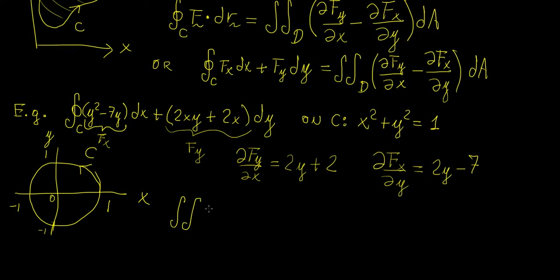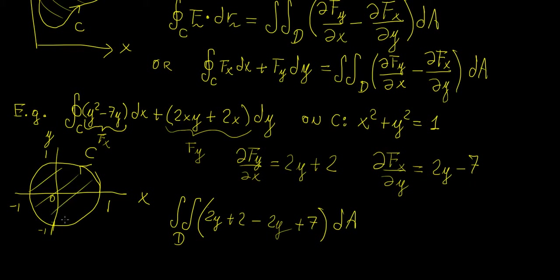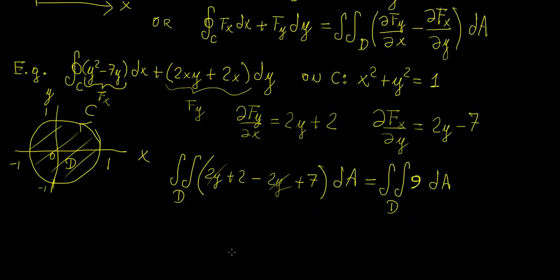We're going to have the following: 2y plus 2 minus (2y minus 7), which is plus 7, dA over the region D, which is the area enclosed by this curve. This becomes the double integral over the region D, and we have 9 here — the 2y terms cancel out — so this is just the double integral of 9 dA. We can write this as 9 times the double integral over region D of dA.